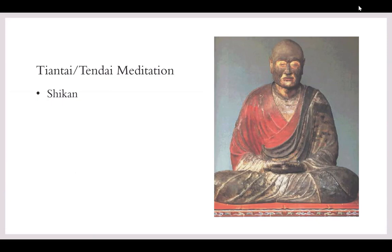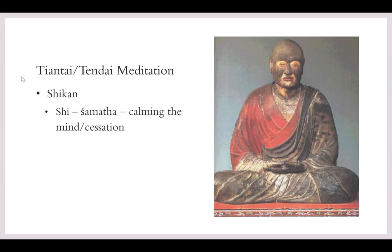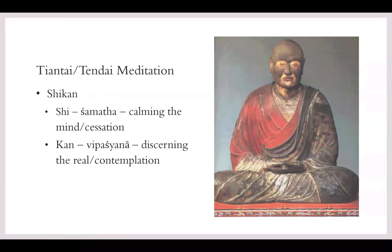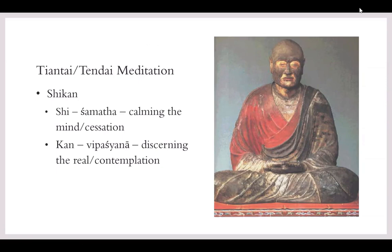The type of meditation that we use is what is referred to as shikan. Shikan is a compound which we can break up into shi, which is shamatha, or calming the mind, also known as cessation, and then kan, which is in Sanskrit vipassana, discerning the real, or contemplation. These two elements need to be brought together. Master Ji describes them as being like the wings of a bird — you can't just spend all of your time doing shamatha or all of your time doing vipassana.